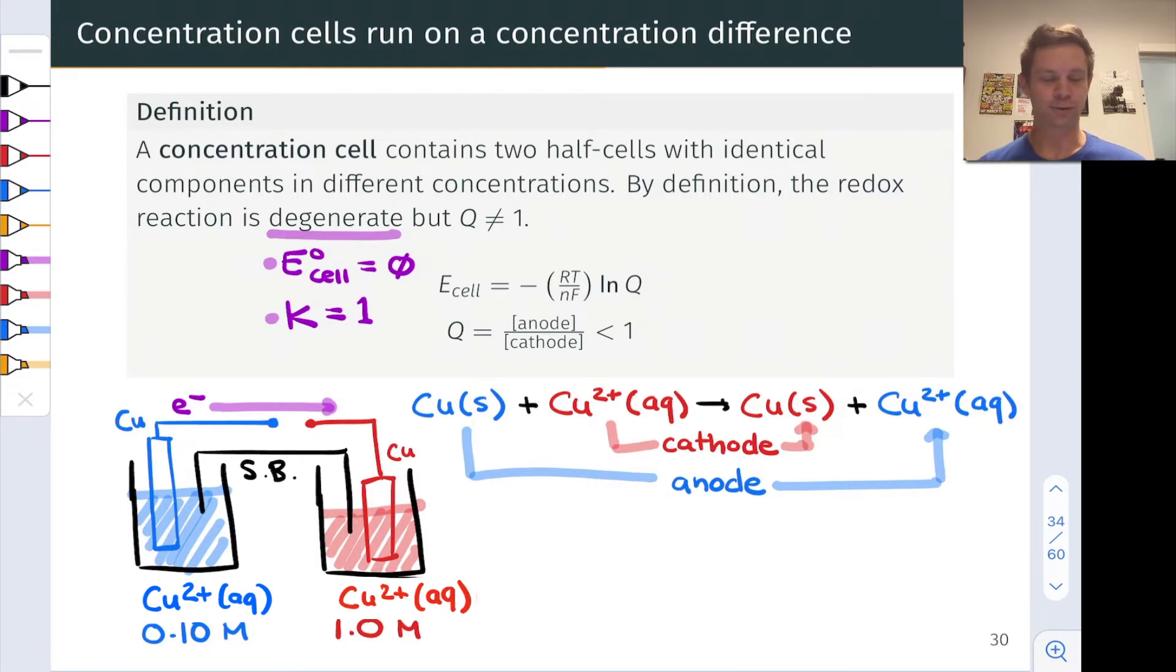There is a driving force for electrons to flow from the left to the right, and this will occur until those two concentrations equalize, at which point we are truly at equilibrium. The reaction quotient under these circumstances is less than one. In the anode, we have a molarity of 0.1 molar, and in the cathode, we have a molarity of copper 2+ of one molar. So Q in this particular case would be equal to 0.10, which is less than one.